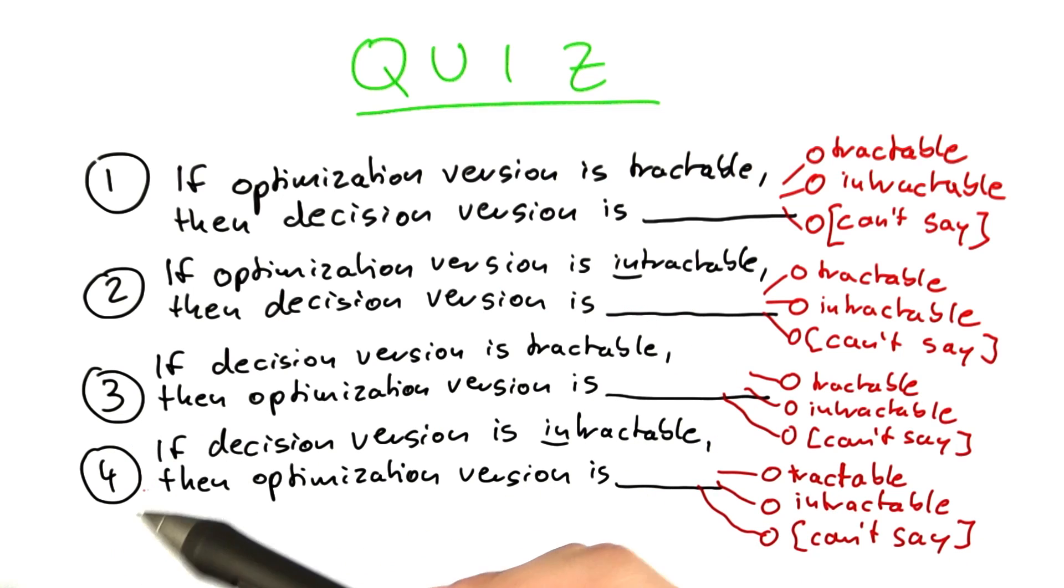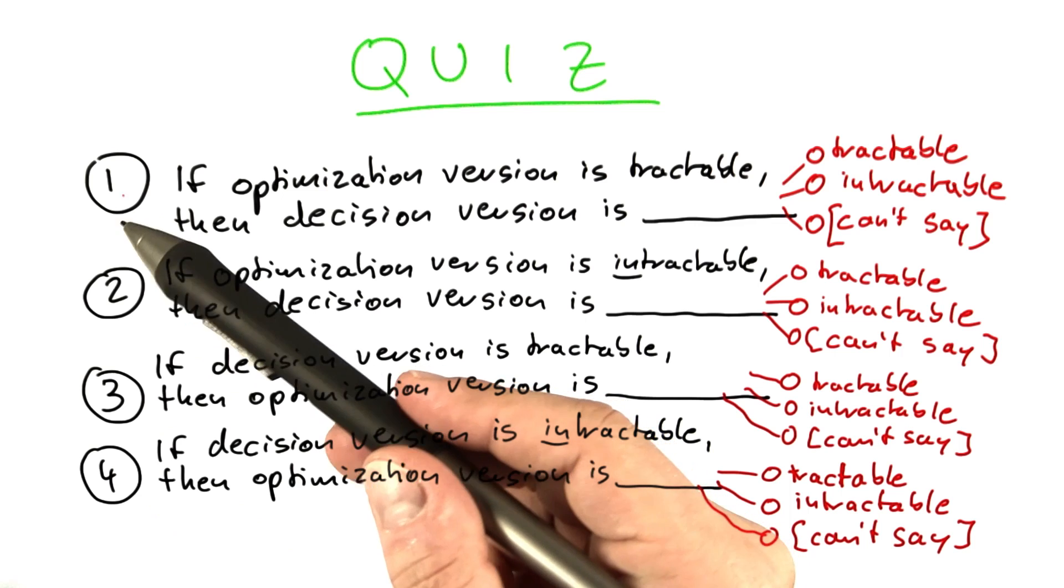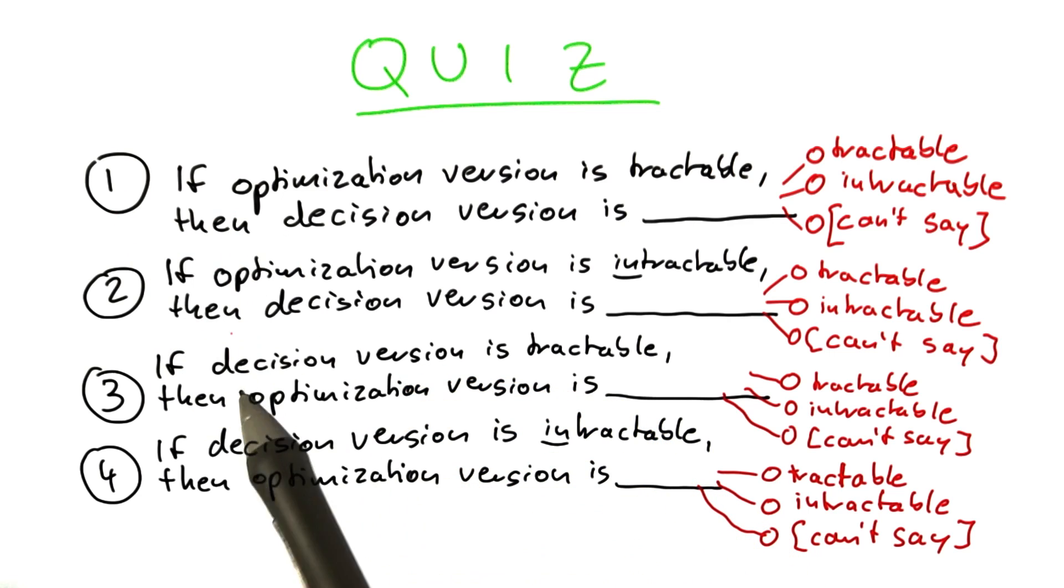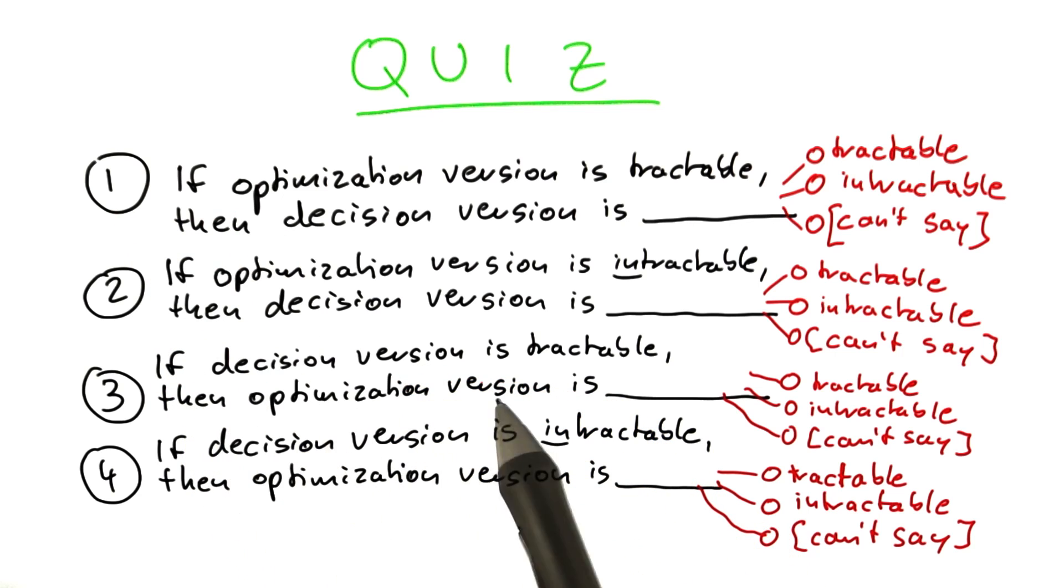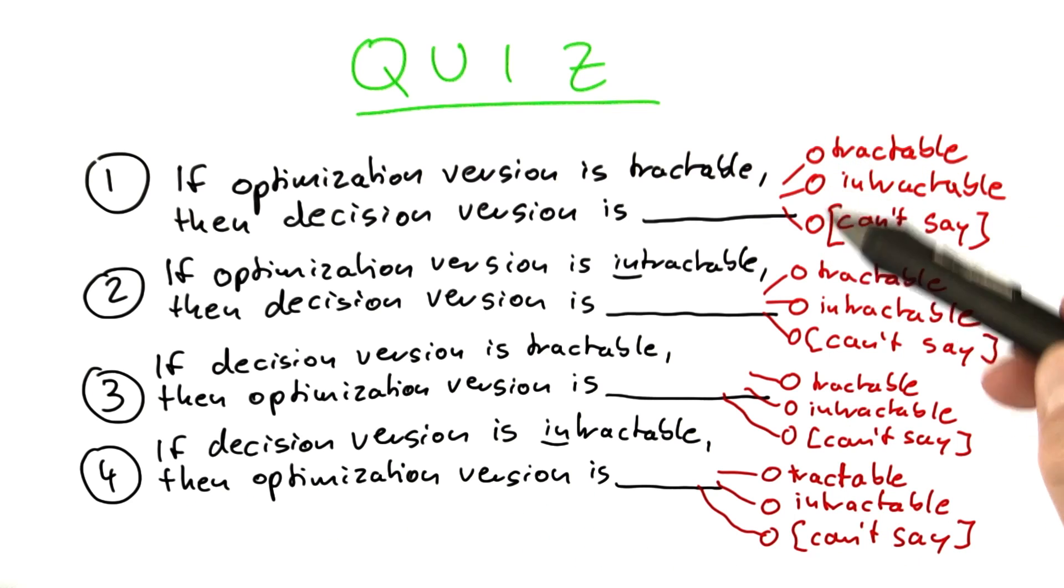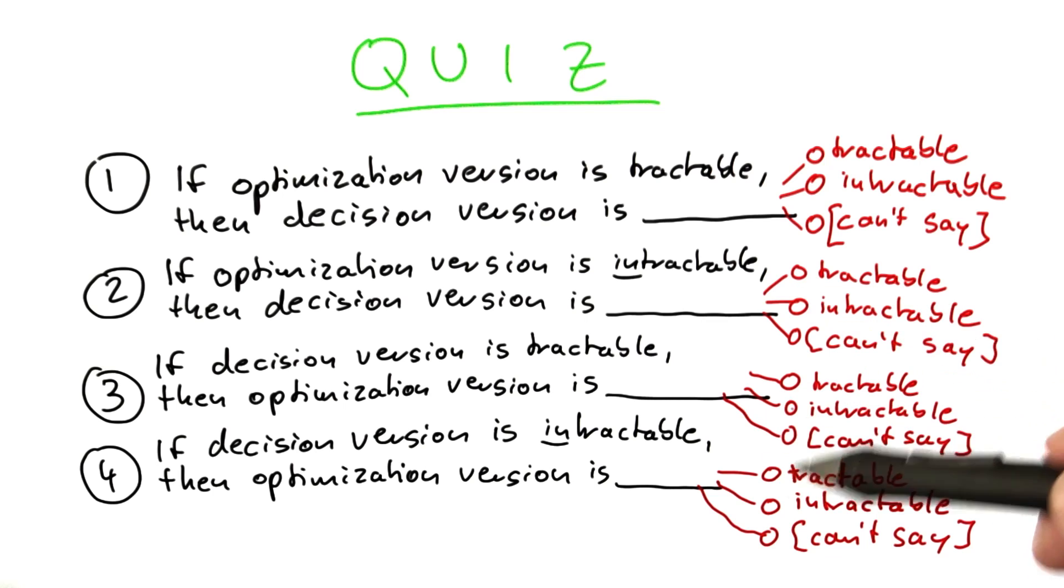And finally, questions number three and four are exactly the other way around than questions one and two. So here we have information about the decision version of a problem. So question number three, if the decision version of a problem is tractable, then what about the optimization version? And question number four, if the decision version of a problem is intractable, then what about the optimization version? So please give your answers here with one of each of the three possible choices here.